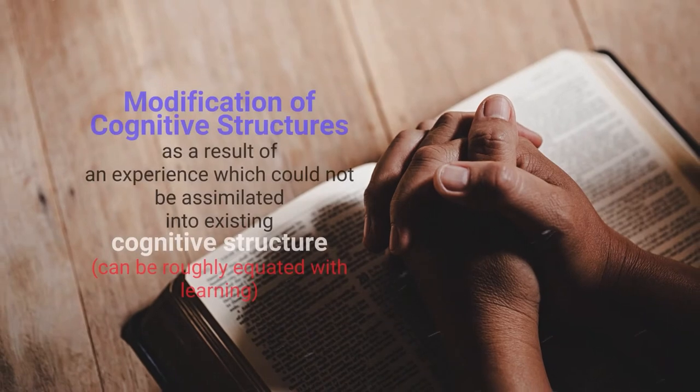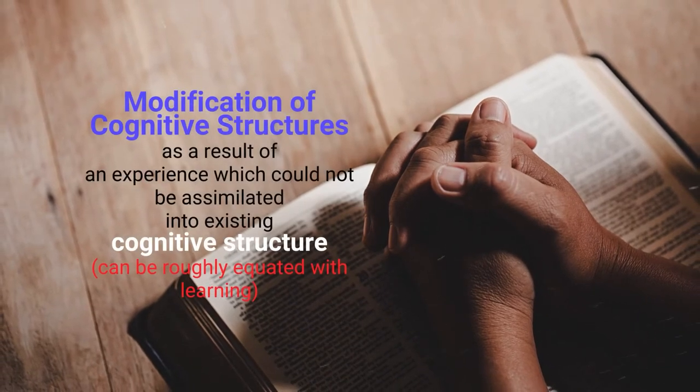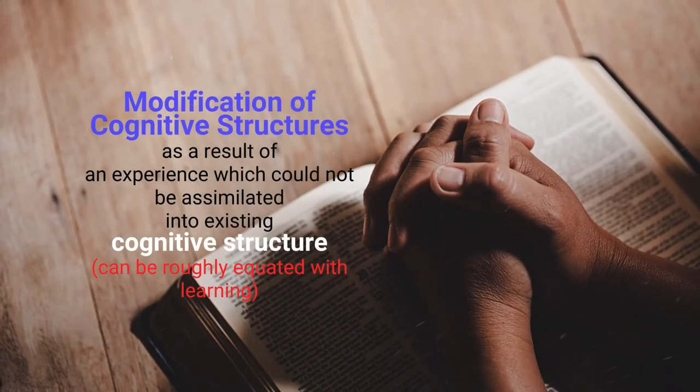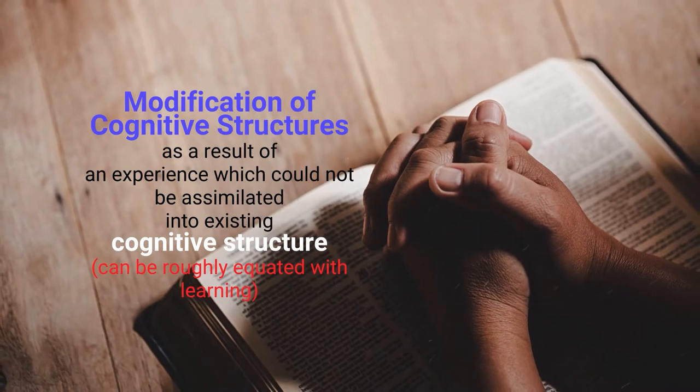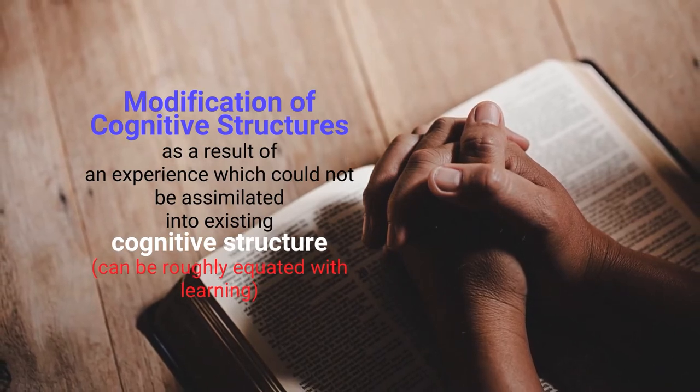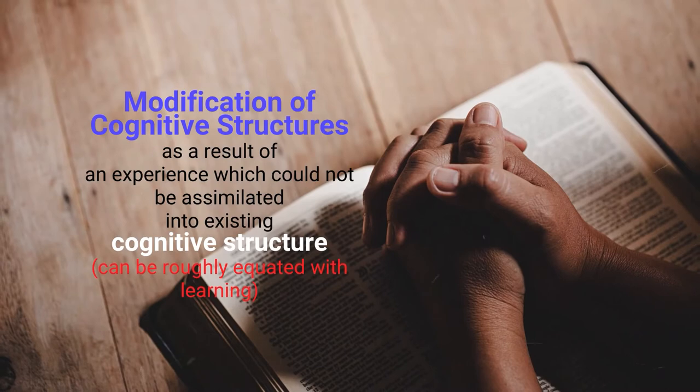Accommodation is the modification of cognitive structures as a result of an experience which could not be assimilated into existing cognitive structure. It can be roughly equated with learning. For accommodation to take place, we need a certain degree of modification to our existing structure, because the present cognitive structure could not imbibe the new experience. So there must be a certain degree of modification to accommodate that.